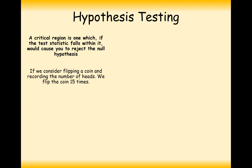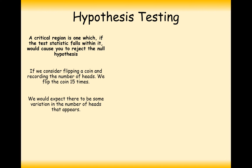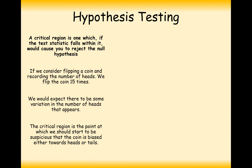Let's have a look at the question here and I'll explain what a critical value is. If we consider flipping a coin and recording the number of heads, and we flip the coin 15 times, we'd expect some variation in the number of heads that appears. Maybe most likely 7 or 8 heads. It could be down as low as 5 or 4 heads. Getting 3 heads is quite unlikely. So what we're looking for is the point at which we would start to be suspicious as to whether the coin is biased or not biased towards heads or tails.